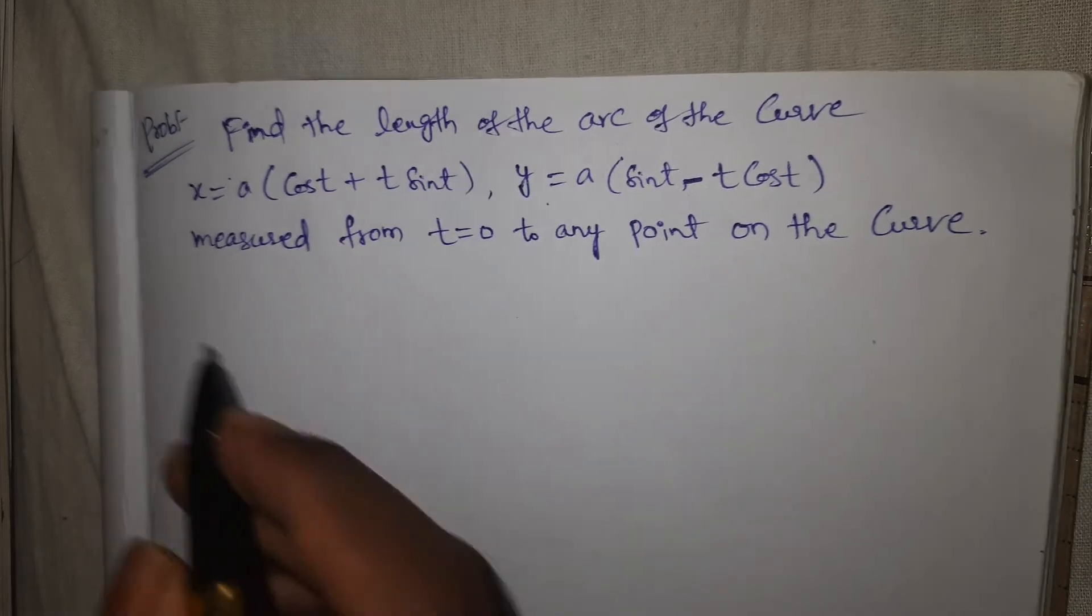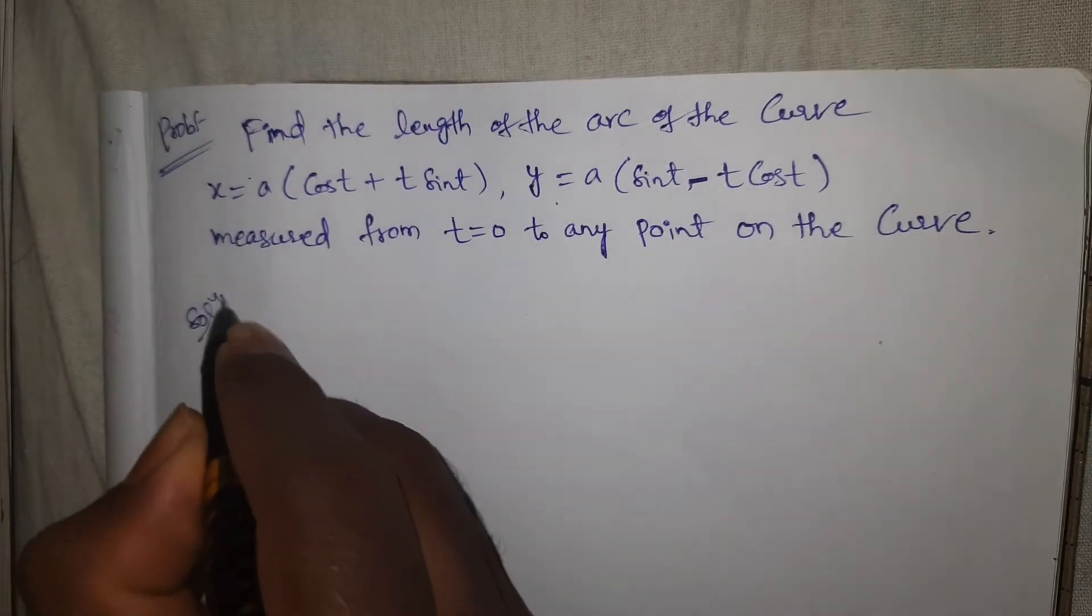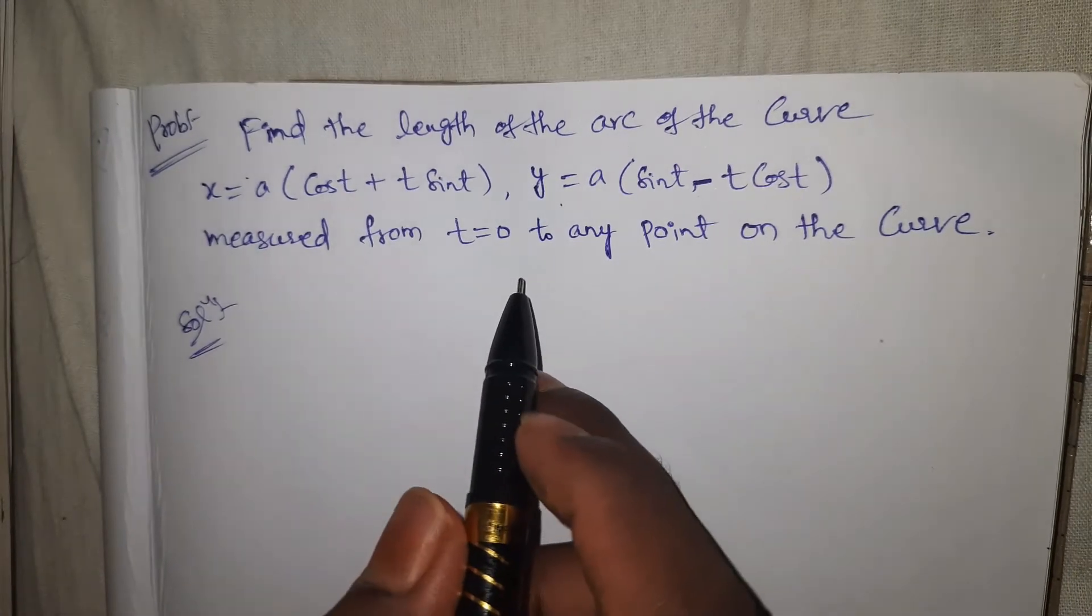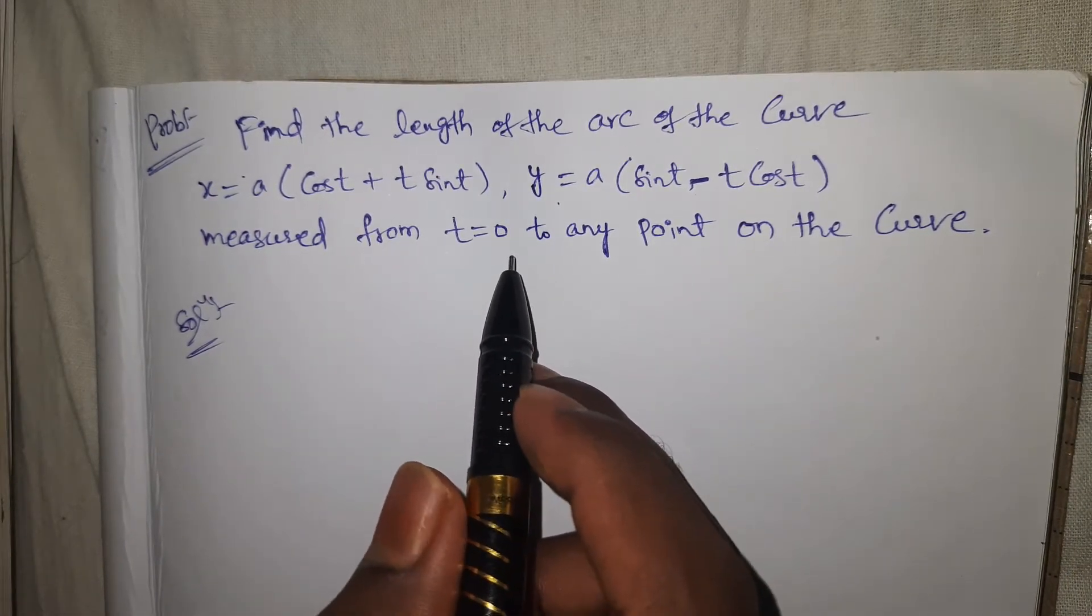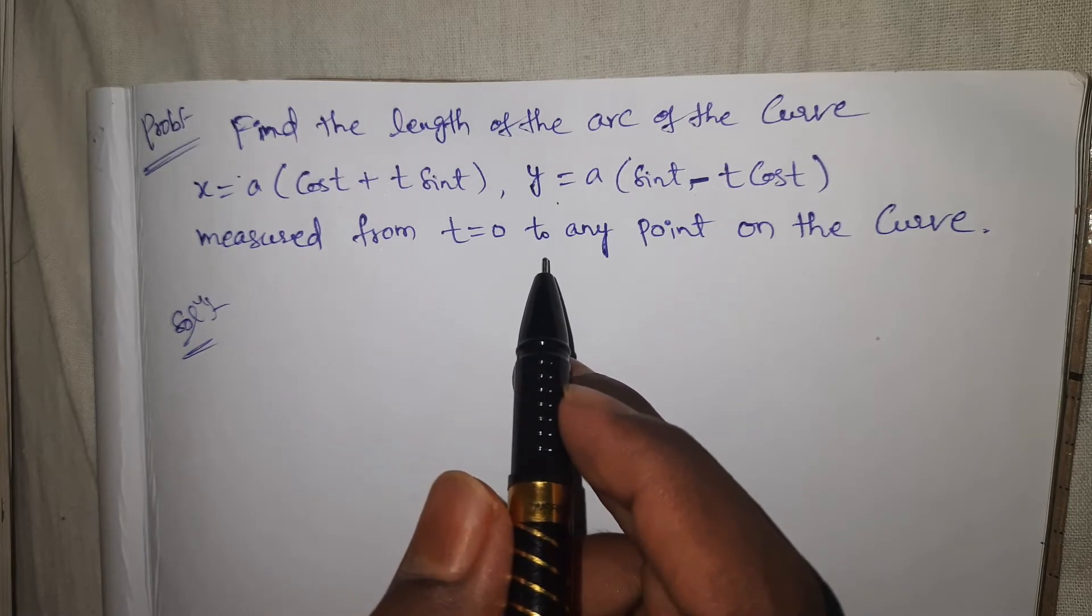To any point on the curve. See here solution. Now t = 0, this is the lower limit. Upper limit not mentioned here in this question.